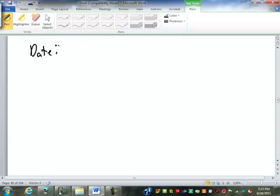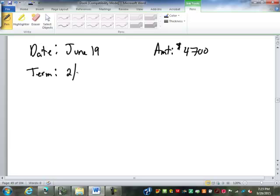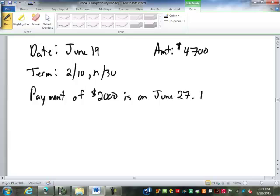Let's say we've got an invoice that is dated June 19th, in the amount of $4,700, not worrying about freight right now, terms 2/10 net 30. Payment of $2,000 is made on June 27th. Find the outstanding balance or the balance due.